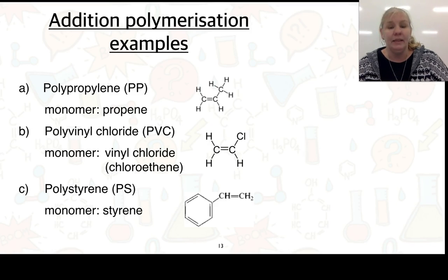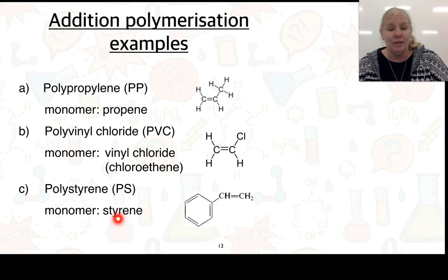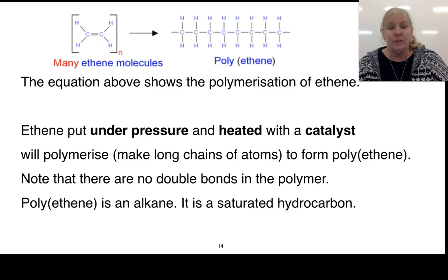We've got polypropylene, with a monomer of propene — one double bond, three carbons. We also have an example for polyvinyl chloride, which is PVC — the monomer is chloroethene, which is a chloro group on an ethene molecule. The final example is polystyrene, whose monomer is styrene, which has a structural ring and a double bond.